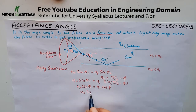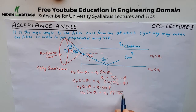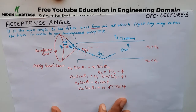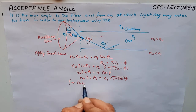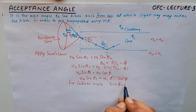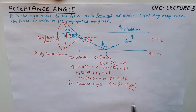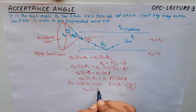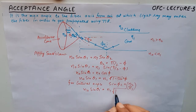So eta naught times sine of theta1 equals eta1 times the square root of (1 minus sine squared phi). For the critical angle condition, we know that sine of phi_c equals eta2 divided by eta1, as discussed in the previous tutorial. Substituting, eta naught times sine of theta1 equals eta1 times the square root of (1 minus (eta2/eta1) squared).